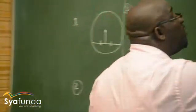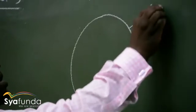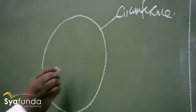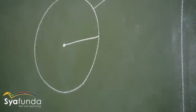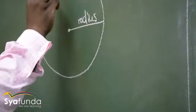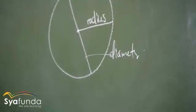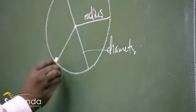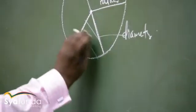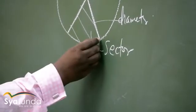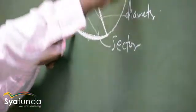It is important that you take note of the parts of a circle, because it makes our lives easier. The distance around the circle is referred to as the circumference. The distance from the center to the circumference is the radius. A line passing through the center is called the diameter. The part formed by two radii is called a sector. This is called an arc — a minor arc or a major arc.